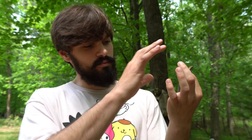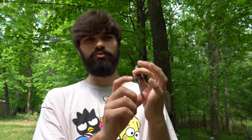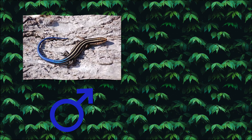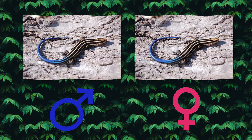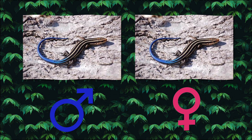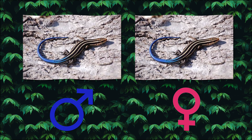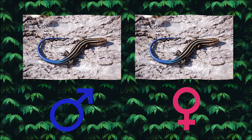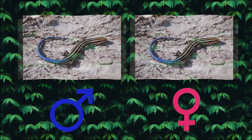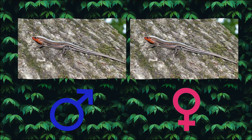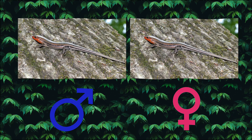Sometimes they'll be all brown, and then sometimes they'll have a bright blue tail. Why is that? Both male and female juvenile five-line skinks have blue tails, but as they grow closer to an adult lizard, they lose that blue tail coloration.